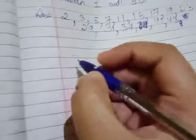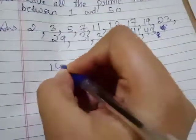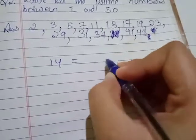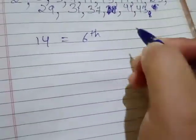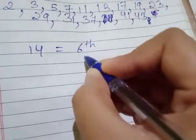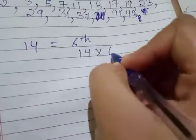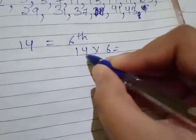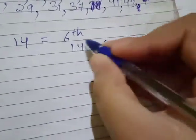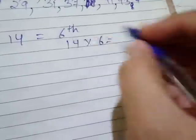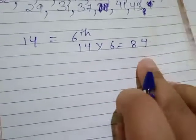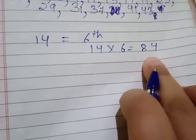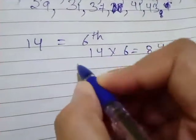See, it is written first of all for 14. So it is asked for sixth multiple. It will be sixth multiple, how to write? 14 multiply 6. That will be: six fours are 24, 2 carry, six ones are 6 plus 2 is 8. 84 is the sixth multiple of 14.